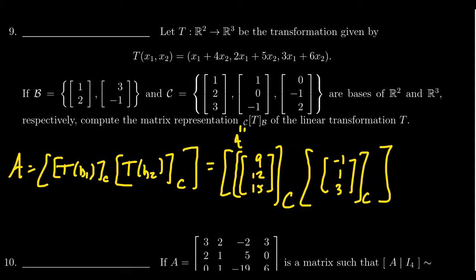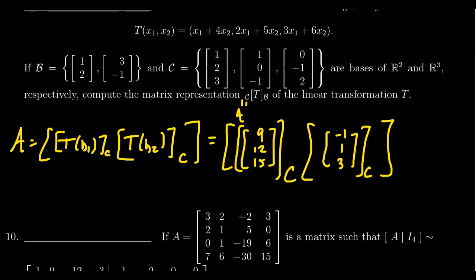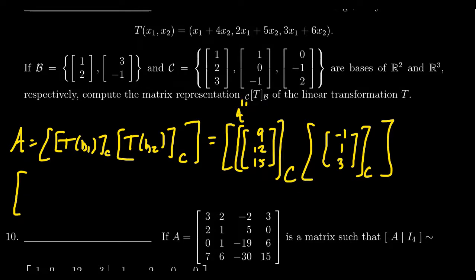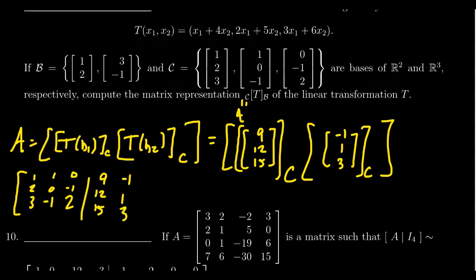To find these coordinate vectors, we take the matrix C and augment it with the vectors we just found. So we form the augmented matrix [C | T(b1) | T(b2)]: the matrix C is (1, 2, 3 / 1, 0, -1 / 0, -1, 2), augmented with (9, 12, 15) and (-1, 1, 3).